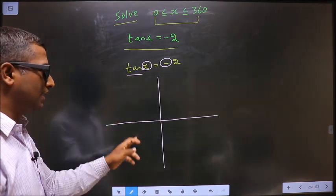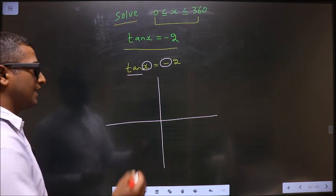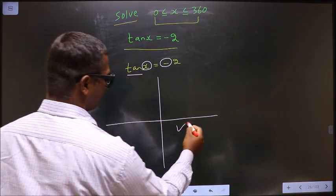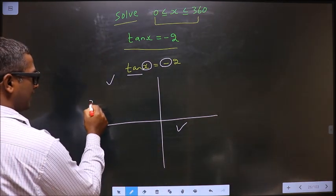It is like all silver tea cups. Tan is negative in the second and in the fourth.